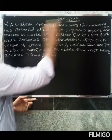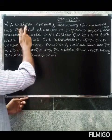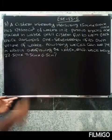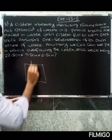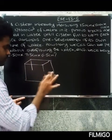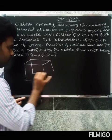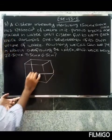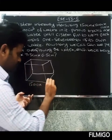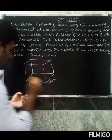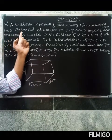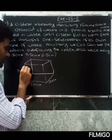So in Exercise 13.5, part A, question 3: A cistern internally measuring 150 centimeters by 120 centimeters by 110 centimeters has 129,600 cubic centimeters of water in it.